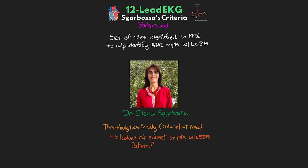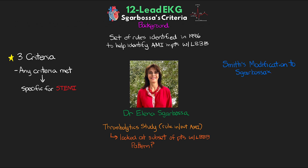Prior to this, the school of thought was that in a patient who has a left bundle branch block, you can't possibly identify them as having a STEMI. For Sgarbossa's Criteria, there are three criteria that if any of them are met, this can be specific for STEMI, and the more criteria present, the greater the sensitivity. Later on, Dr. Smith — the same Dr. Smith from the ECG blog mentioned last lesson — came along and made a slight modification, referred to as Smith's modification to Sgarbossa's Criteria, which Dr. Sgarbossa herself later endorsed.